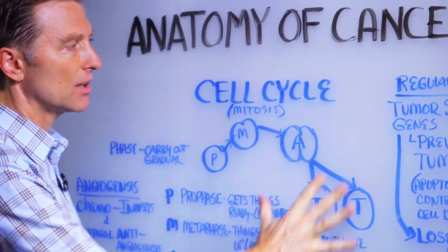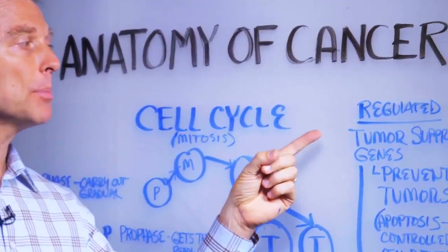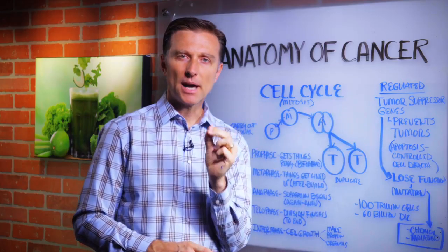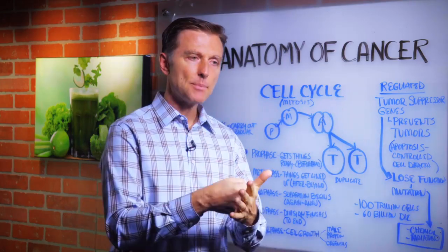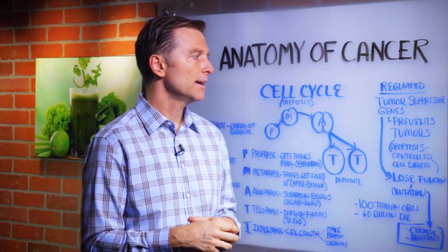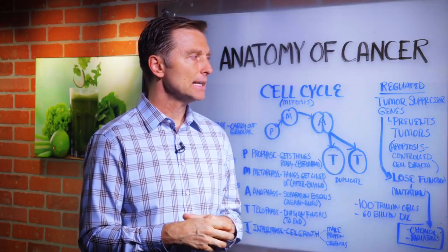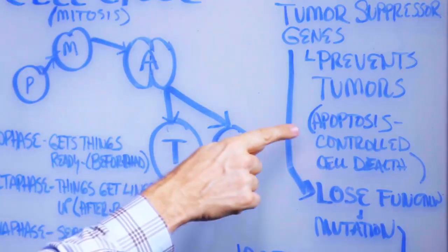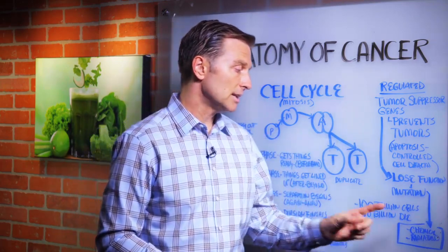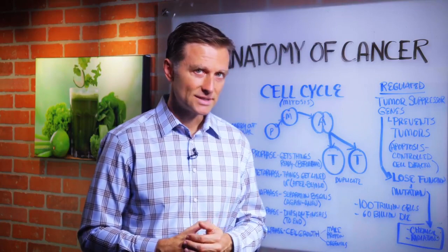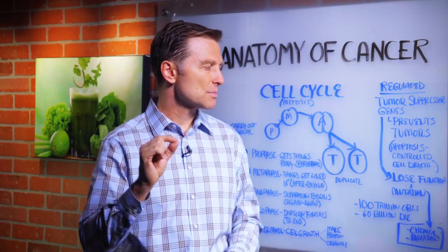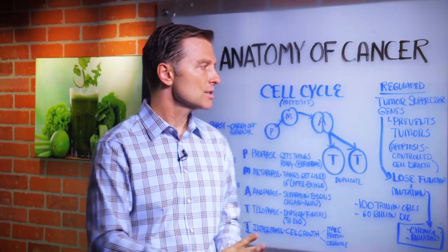This entire cell cycle is tightly regulated by a couple of things. One is called the tumor suppressor gene — it's like a little brake pad inside the cell that stops the copy machine from producing too many cells. It does this by causing the cells to commit suicide, a process called apoptosis — programmed cell death. About 60 billion cells are doing that every single day. Don't worry though — you have about 100 trillion cells that make up your whole body, so it's a very small fraction.